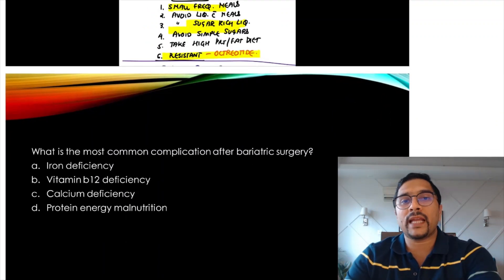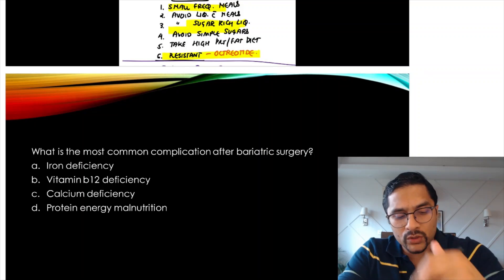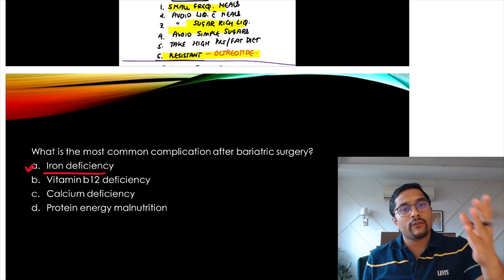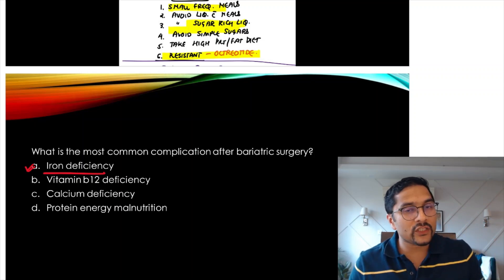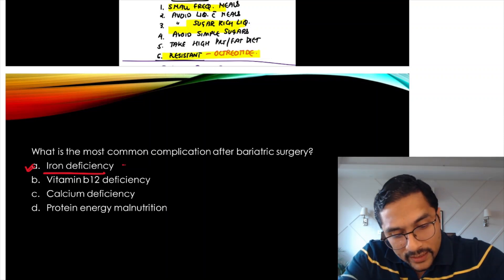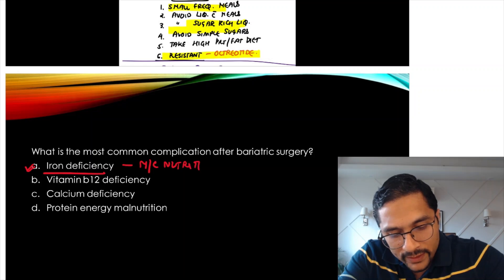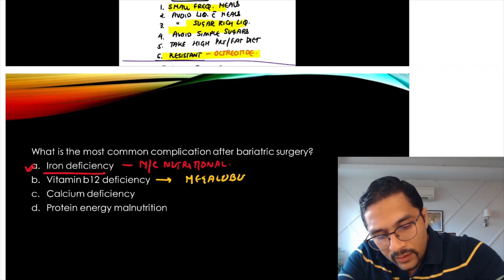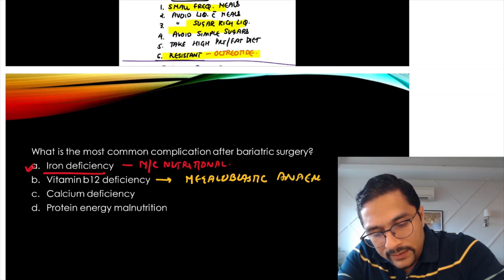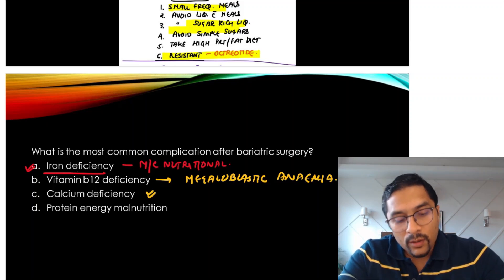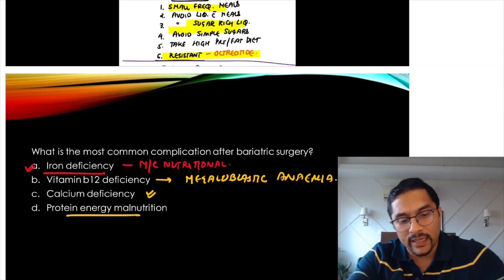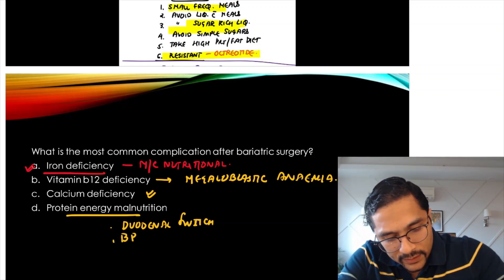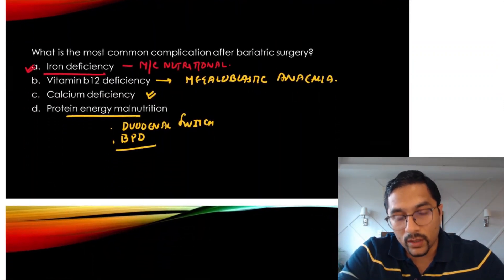What is the most common complication after bariatric surgery? The most common complication following bariatric surgery is iron deficiency anemia — last year two questions were asked from bariatric surgery complications. Iron deficiency is the most common nutritional deficiency. Vitamin B12 deficiency can also occur, giving rise to megaloblastic anemia. Calcium deficiency can also be seen. Protein energy malnutrition is only seen in certain surgeries like duodenal switch and BPD — not in all bariatric surgeries.